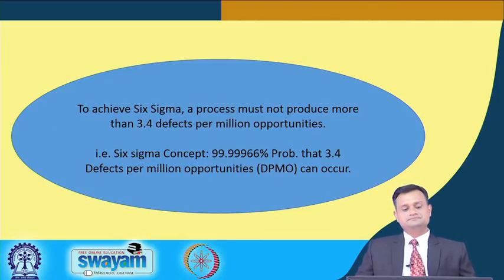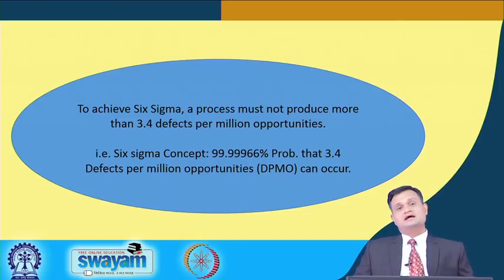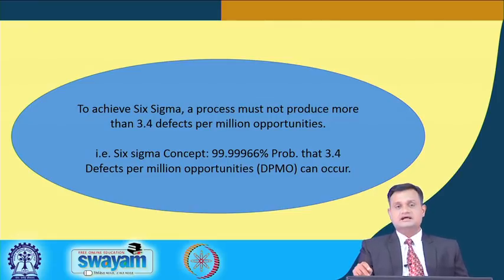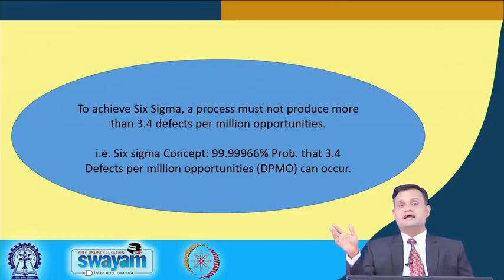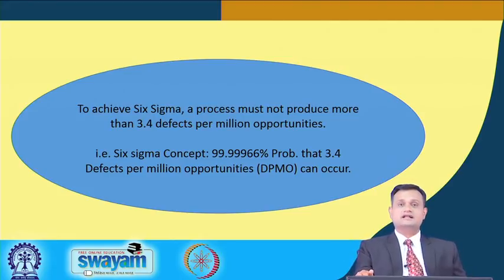To achieve Six Sigma, a process must not produce anything more than 3.4 defects per million opportunities. Through the systematic process of DMAIC as part of Six Sigma, this stringent target can be achieved. Six Sigma means a 99.99966 percent probability — that only 3.4 defects per million opportunities can occur. This is exactly where companies are trying to set the benchmark by achieving an extremely low defect rate, reducing scrap and rework, and producing A-grade quality products that extend better value to customers.